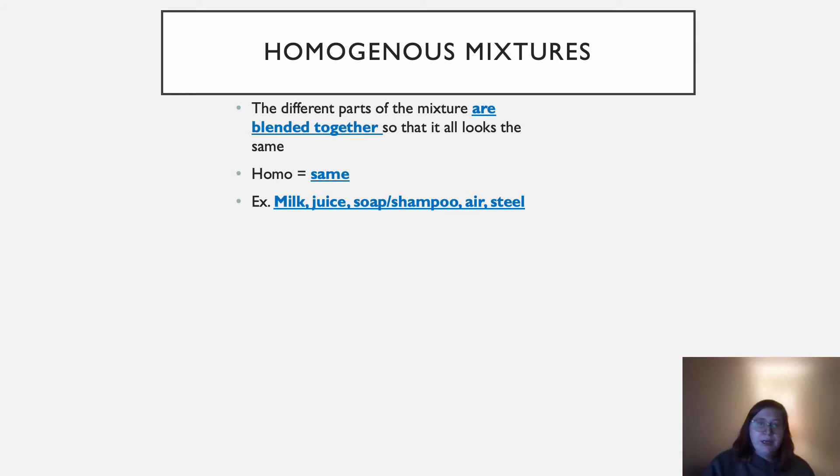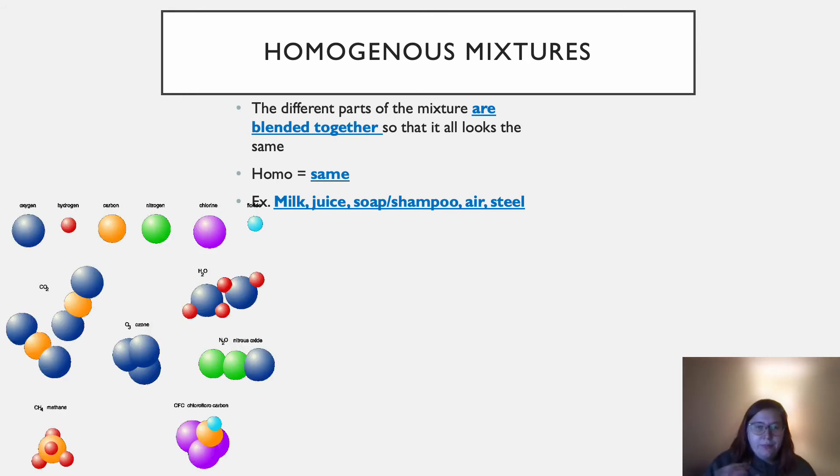So here's air, which is an interesting mixture, because air doesn't look like anything to us, right? But if you could look at the particles that are in air, you would see that you have elements like oxygen, hydrogen, carbon, nitrogen, chlorine,